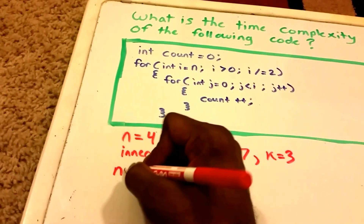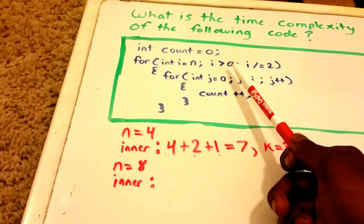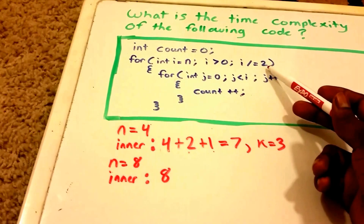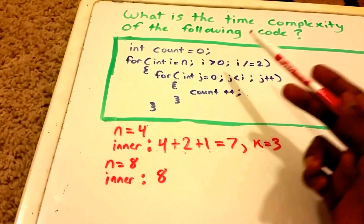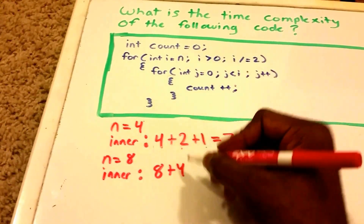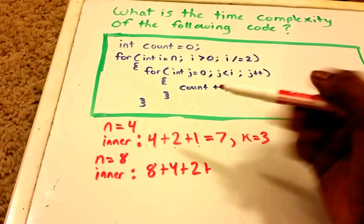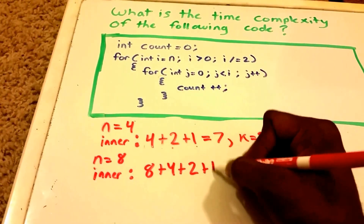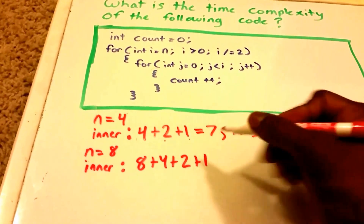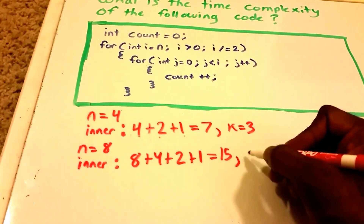Let's try n equals 8. i equals 8, which is greater than zero, so the inner loop runs 8 times. Then i becomes 4 — inner loop runs 4 times. Then i becomes 2 — inner loop runs 2 times. Then i becomes 1 — inner loop runs 1 time. Then 1 divided by 2 is 0, so we stop. In total: 8 + 4 + 2 + 1 equals 15, and we had 4 outer iterations, so k equals 4.